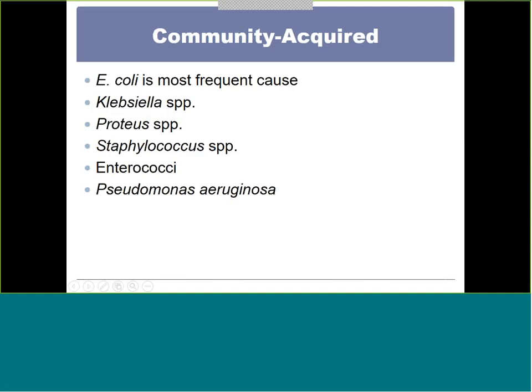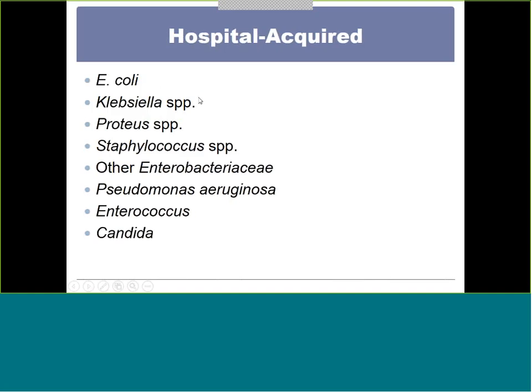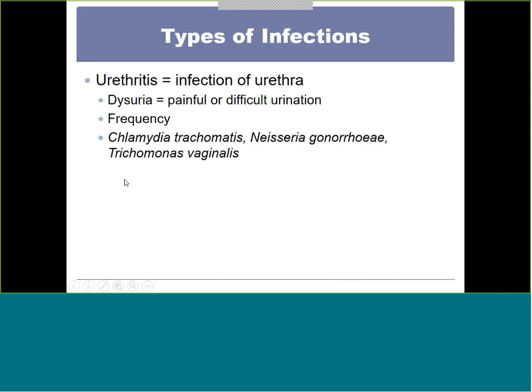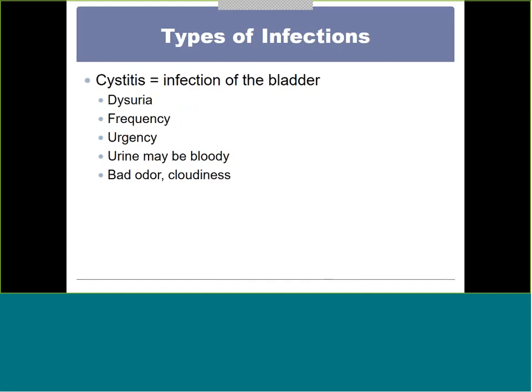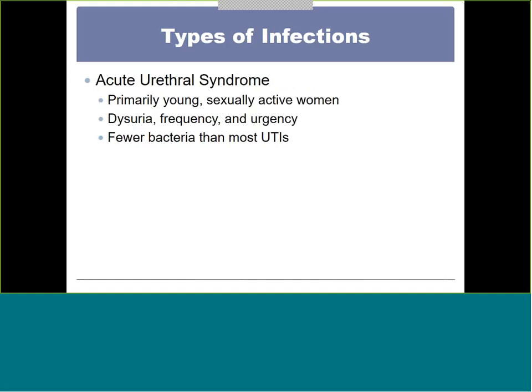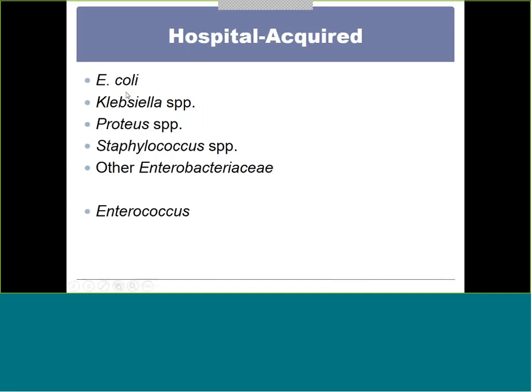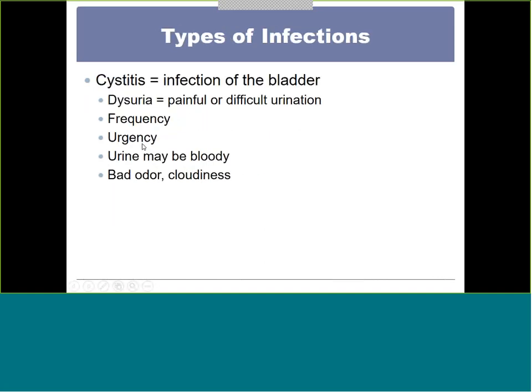Whether you acquire a UTI in the community or in the hospital, the causative organism list is similar. Types of infections include urethritis, which is an infection of the urethra and is always due to an STD — chlamydia, gonorrhea, and Trichomonas vaginalis. Cystitis is the lower UTI, an infection of the bladder, presenting with dysuria, frequency, and urgency, with cloudy urine indicating bacterial growth.